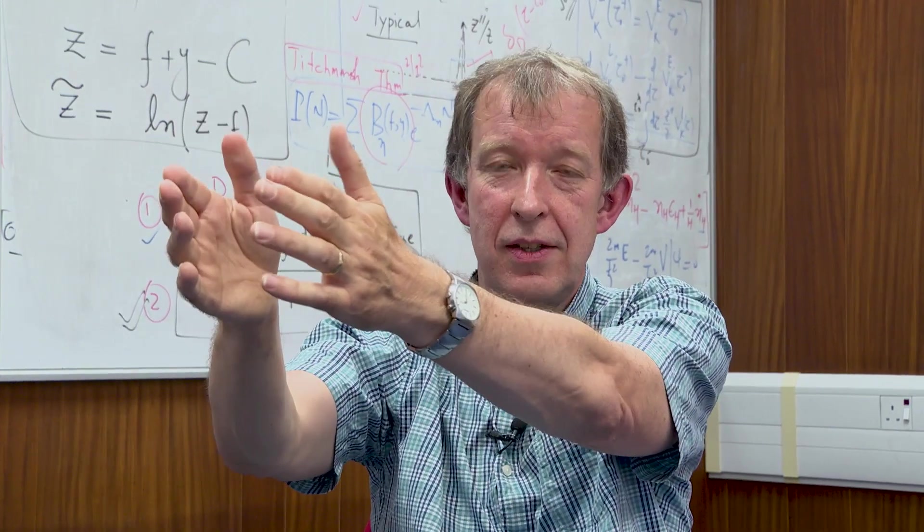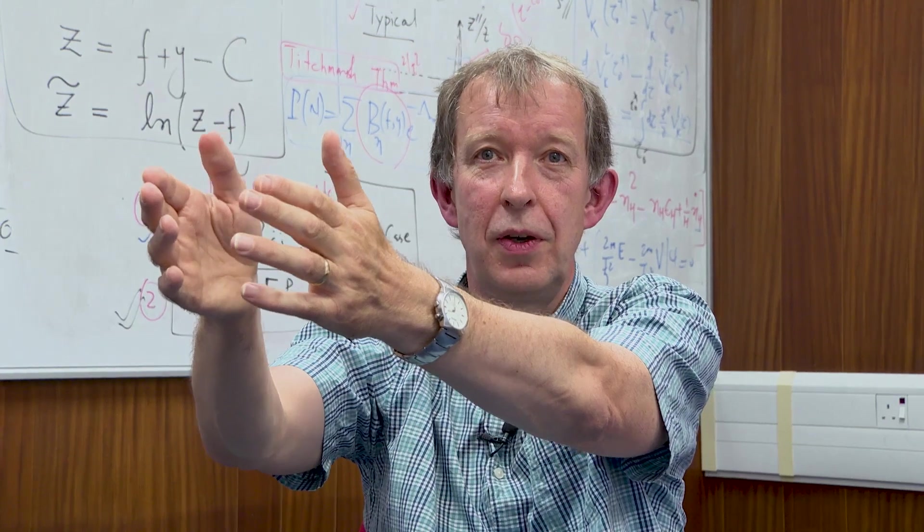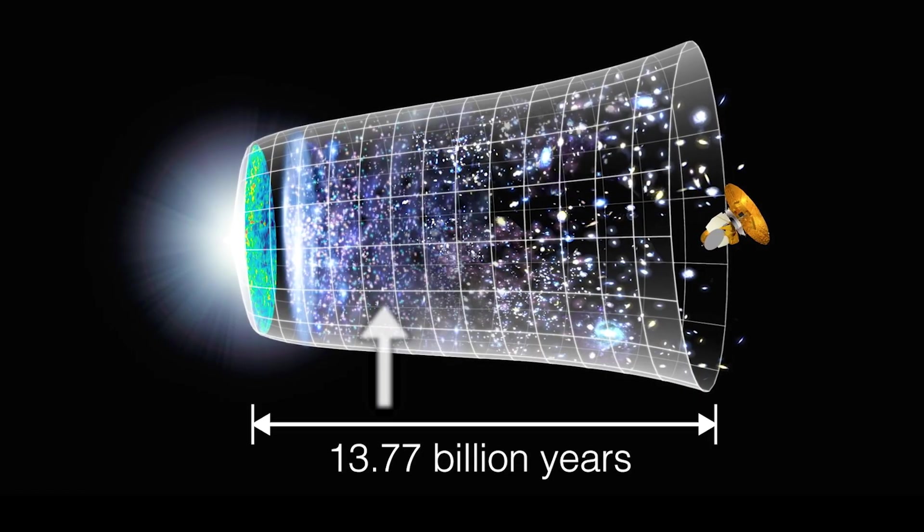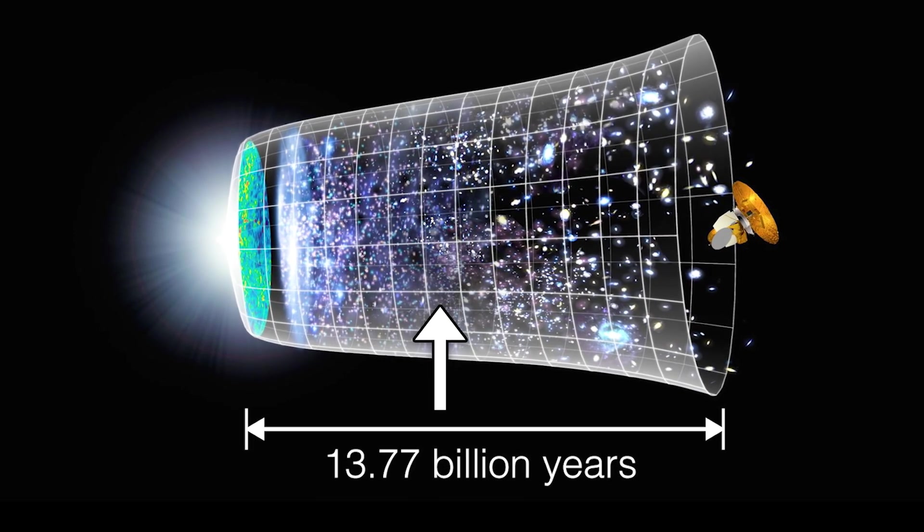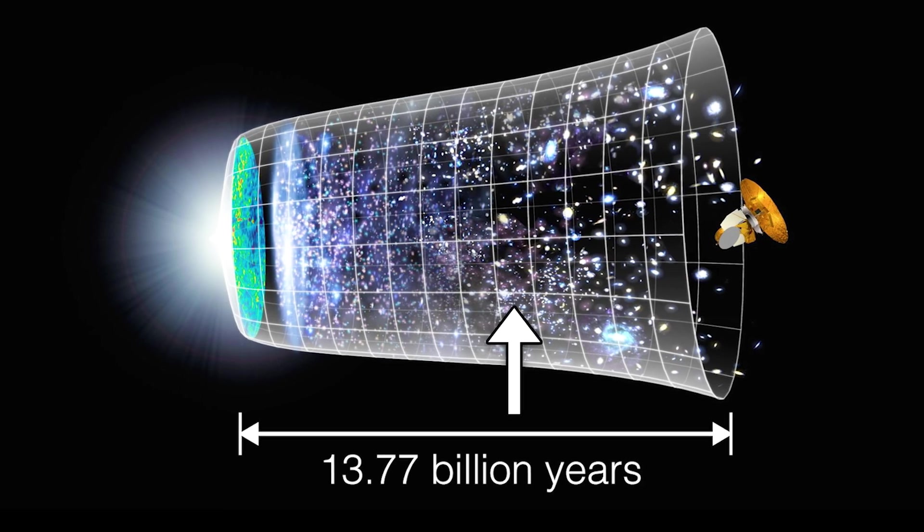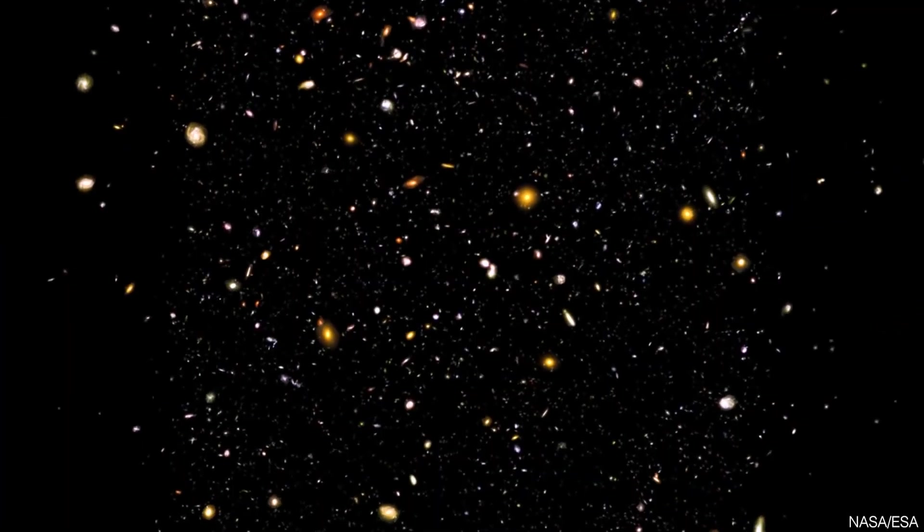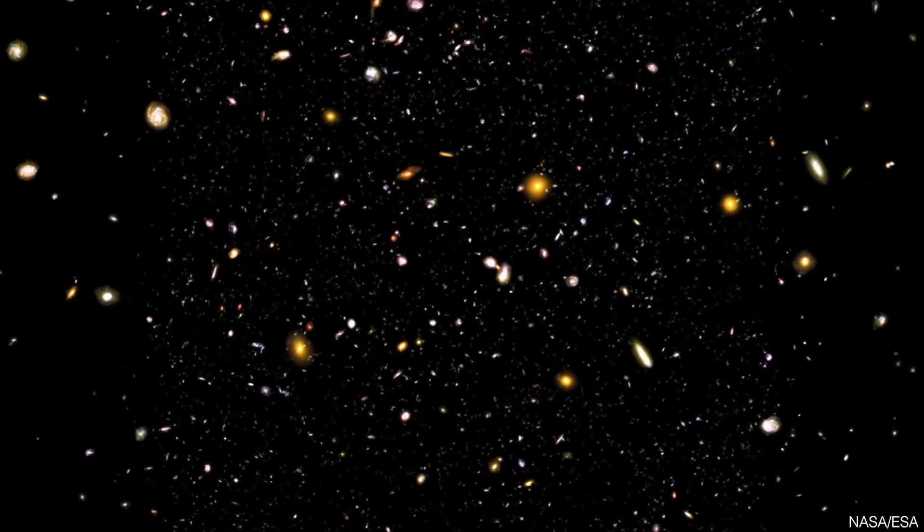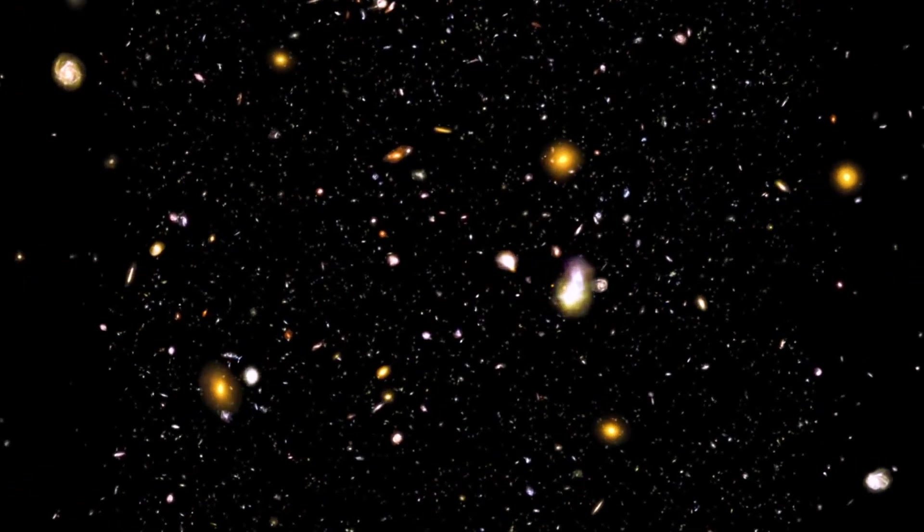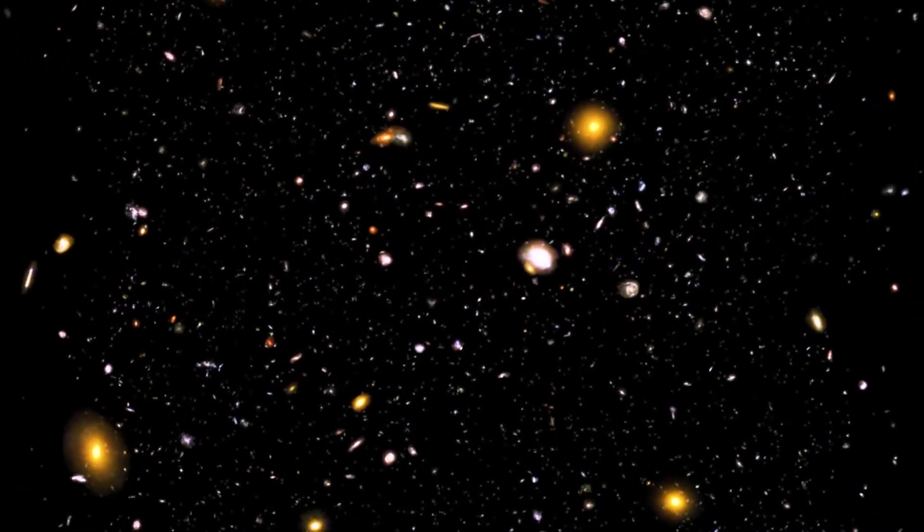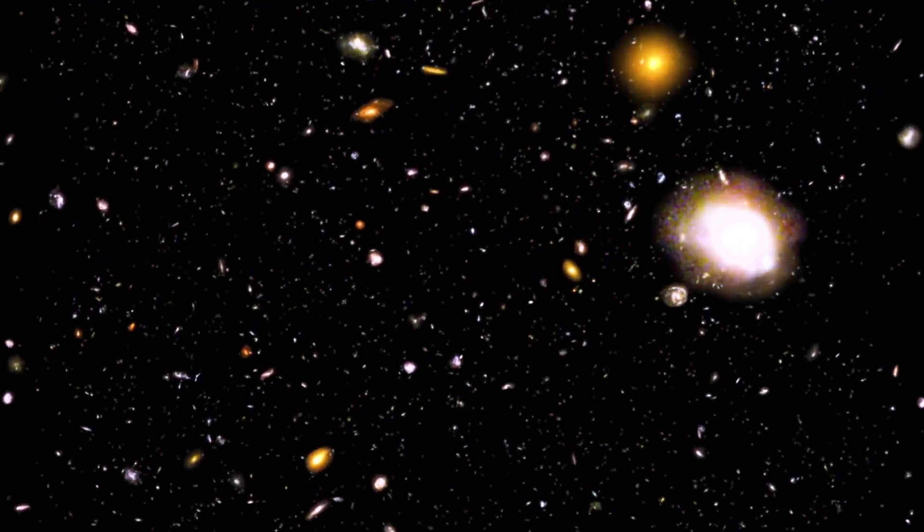And so it can see galaxies forming 13 billion years ago, but it can see galaxies then as they were, say, 10 billion years ago, 6 billion years ago, 5 billion years ago. And what you're beginning to get is, as long as you're thinking about the same type of galaxies, you're beginning to understand the evolution of those galaxies. How does a galaxy evolve through time?